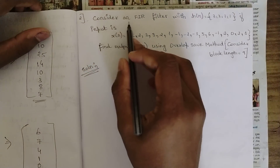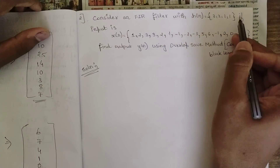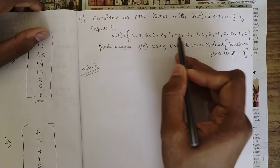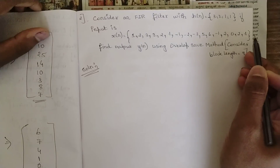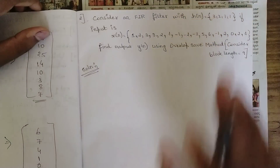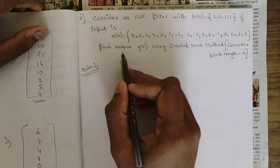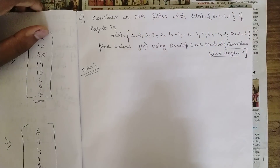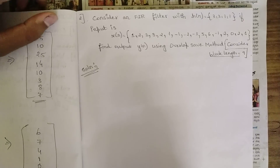The second question: consider an FIR filter with impulse response h[n] = {3, 2, 1, 1}. The input sequence x[n] is given as {1, 2, 3, 3, 2, 1, -1, -2, -3, 5, 6, -1, 2, 0, 2, 1}. This is one long sequence — don't panic, the method is very simple. We need to find the output y[n] using the overlap save method, with block length L = 9.